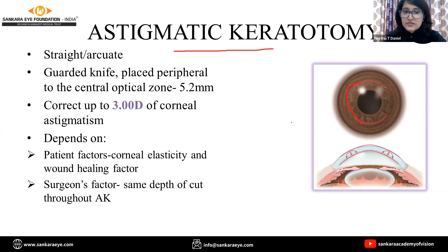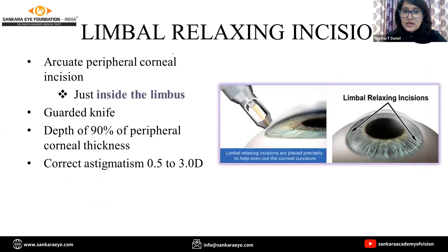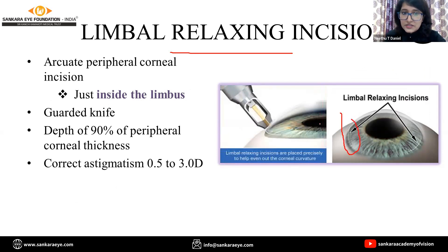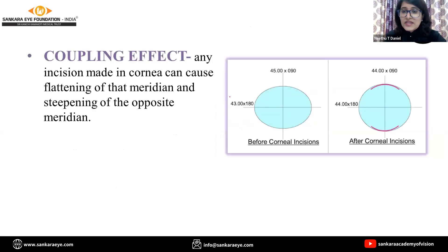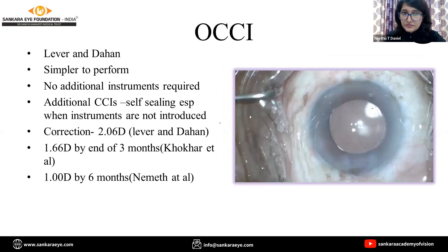Astigmatic keratotomy can correct up to three diopters of astigmatism. Coming to the limbal relaxing incisions, they are very similar to the AK cuts but are placed just inside the limbus at 90% of the peripheral corneal thickness. Whenever there are two incisions, there is a coupling effect — there will be flattening of that meridian and steepening of the opposite meridian, which is 90 degrees away.